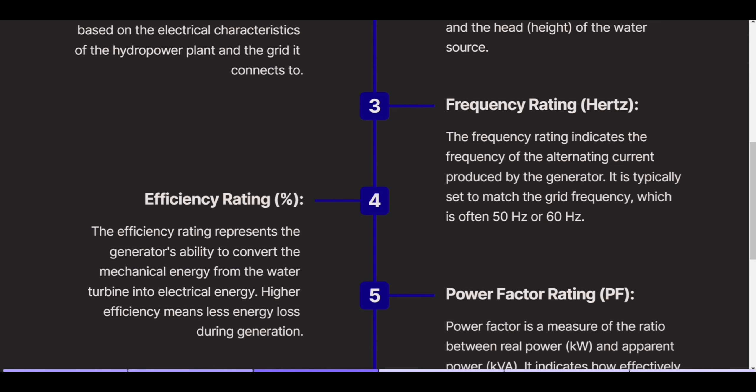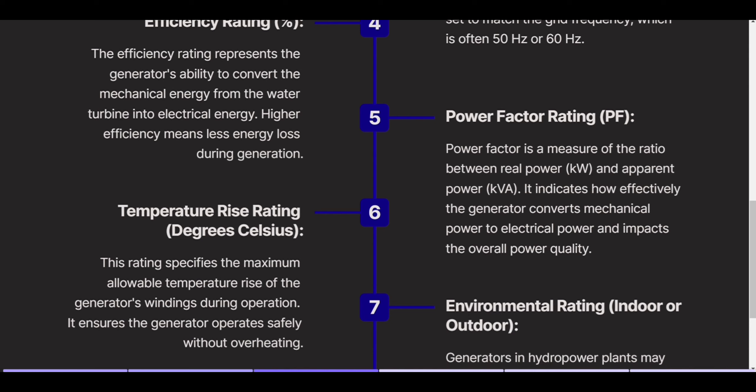Efficiency rating represents the generator's ability to convert the mechanical energy from the water turbine into electrical energy. Higher efficiency means less energy loss during generation. Power factor is a measure of the ratio between real power and apparent power. It indicates how effectively the generator converts mechanical power to electrical power and impacts the overall power quality.